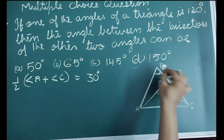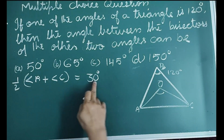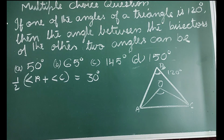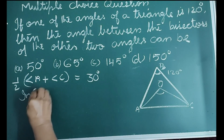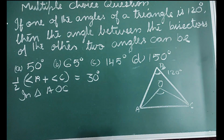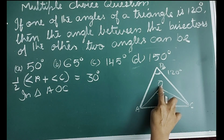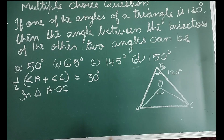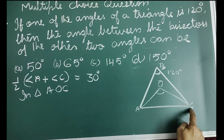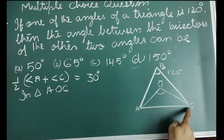From triangle ABC, we found that half of (angle A + angle C) = 30°. Now, in triangle AOC, angle OAC + angle OCA + angle AOC = 180° by angle sum property. But angle OAC = half of angle A and angle OCA = half of angle C.